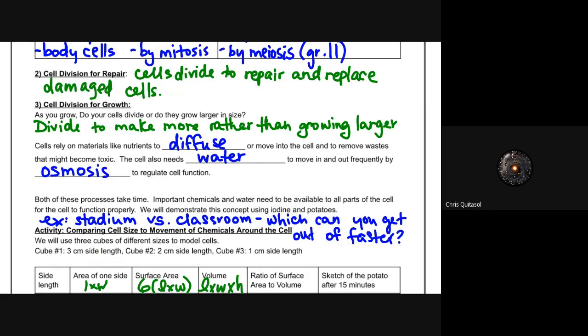The third reason that cells divide is they go through cell division to grow. Many of you are still growing, so as you grow your cells divide and they do not grow larger in size, but they in fact make more cells. So instead of just getting larger and larger, they make more cells.